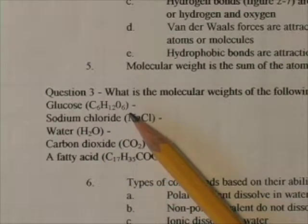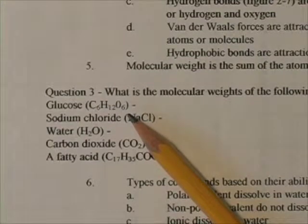Oxygen, on the other hand, has 8 protons and 8 neutrons for an atomic mass of 16 for each oxygen. But there are 6 oxygens in glucose, so you'd have to multiply 16 times 6.